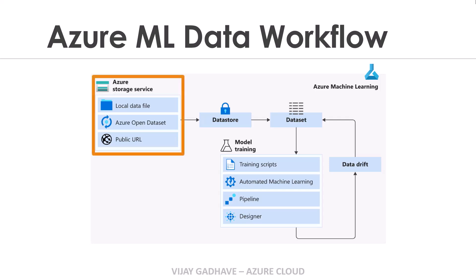In Azure Storage Service, our data is stored. We have multiple options: we can store our data as a local data file, we can store our data as an Azure open data set, or we can access the data set from a public URL. So with the help of Azure Storage Services, we have data in place.